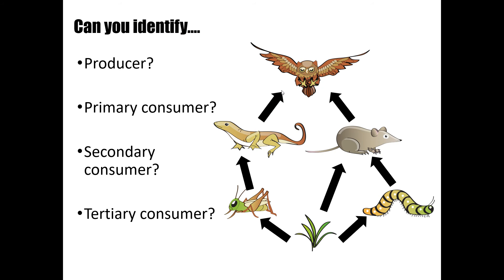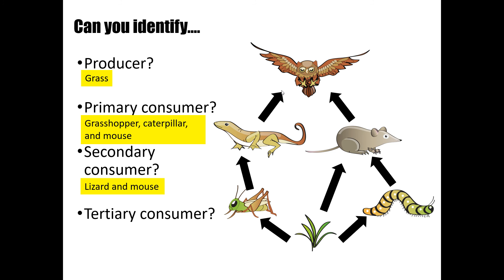Pause the video and identify the producer, primary consumer, secondary consumer, and tertiary consumer in this food web. The grass is the producer. Primary consumers were the grasshopper, caterpillar, and mouse. Secondary consumers were the lizard and the mouse. The owl is our tertiary consumer, also known as the apex predator in this particular picture.